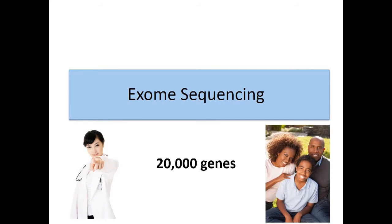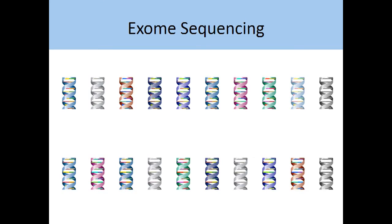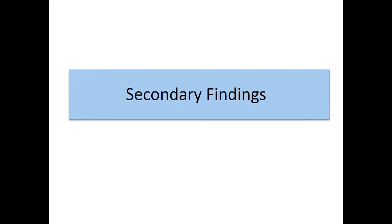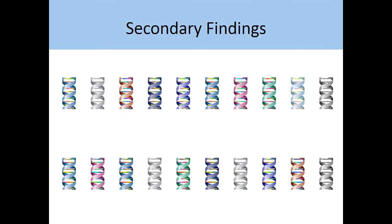You are watching this video because you or someone in your family is having exome sequencing to look at all 20,000 genes. This testing is being done because you or your family member has a medical condition that we think may have a genetic cause, and we are doing exome sequencing to try to identify the causative genetic mutation. As part of this exome test, you have the option to ask us to look for other genetic mutations that might affect your health, for which there are steps that you can take to stay healthy. These other genetic mutations are called secondary findings. Though this is not the main reason for getting tested, these other genetic mutations may be revealed by the comprehensive genetic test, and would be unrelated to the main medical condition that led you to have exome sequencing.